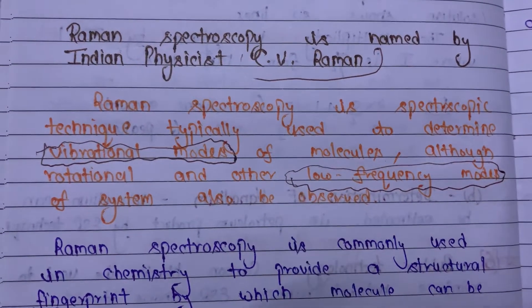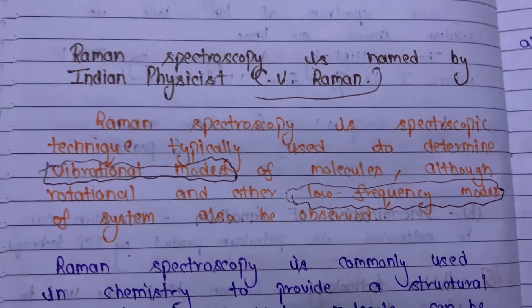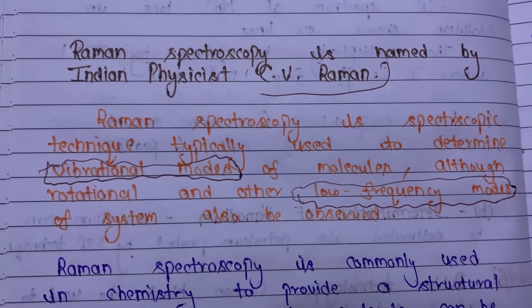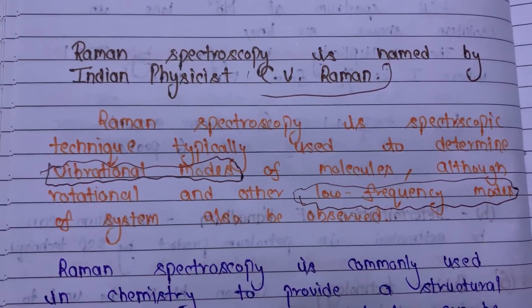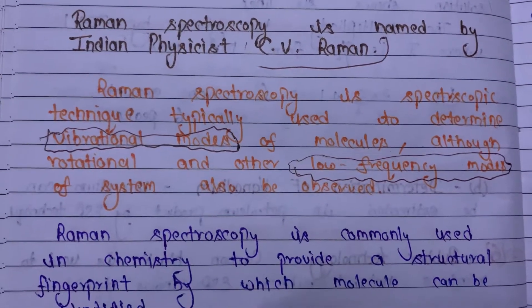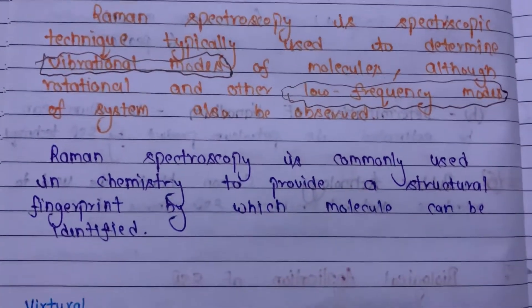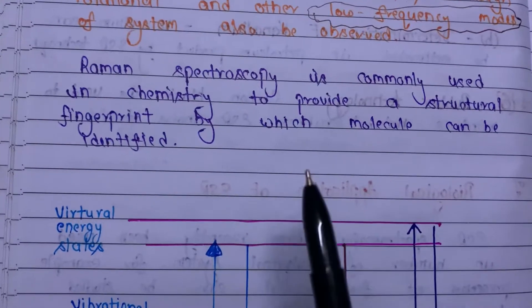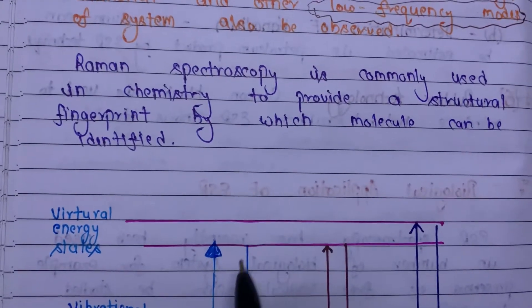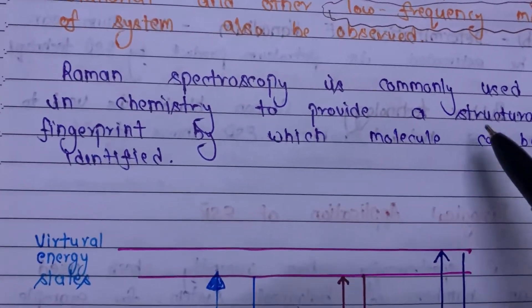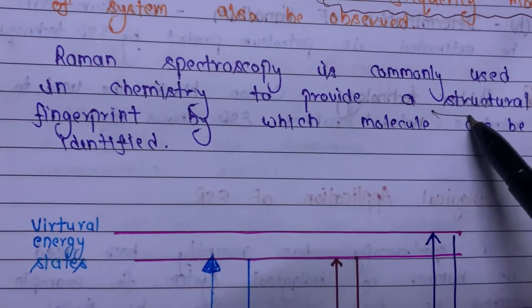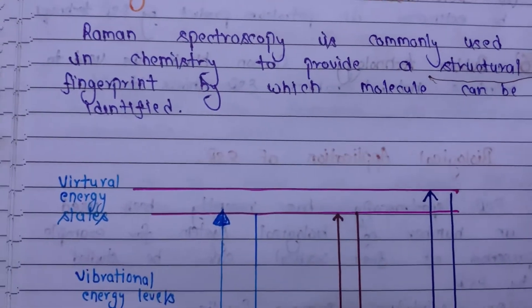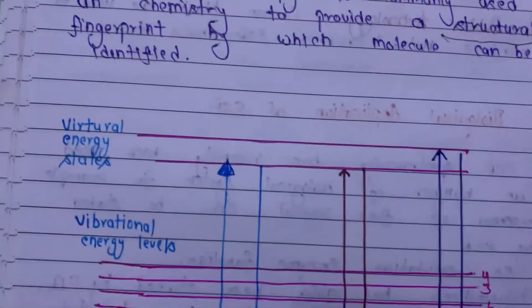So after Raman Spectroscopy, CV Raman introduced this technique — the reason being vibrational modes and low-frequency modes. Raman Spectroscopy is commonly used in chemistry to provide a structural fingerprint — again, an important point: structural fingerprint.